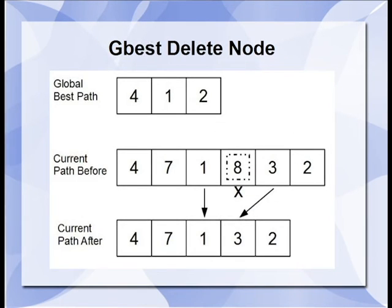G-best delete node looks for nodes that exist in the current path that do not exist in the global best path. This node is then removed to create a path that is one shorter.